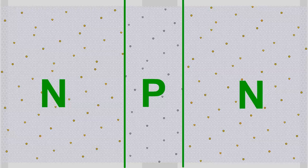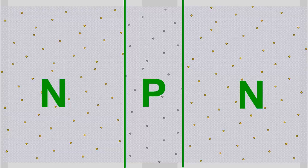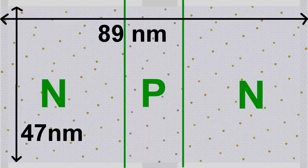This device consists of a sandwich of variably doped semiconductor materials. In this animation there is an N-doped layer at the left side, a P-doped layer in the middle, and once again an N-doped layer at the right side of the crystal.